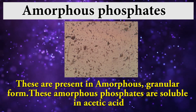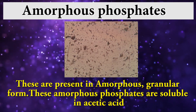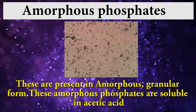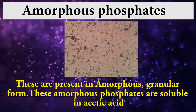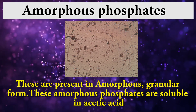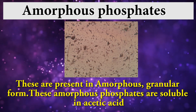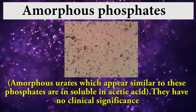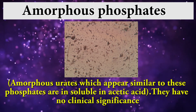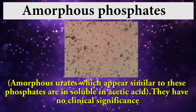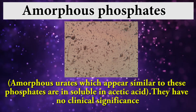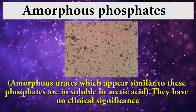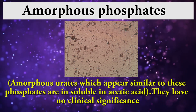Amorphous phosphates: these are present in amorphous granular form. Amorphous phosphates are soluble in acetic acid. Note that amorphous urates, which appear similar, are insoluble in acetic acid. Amorphous phosphates have no clinical significance.